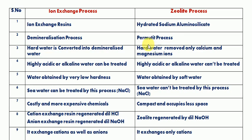In the zeolite process, permutit process is another name. Permutit process uses synthetic ion exchange material, while zeolite is a natural material — a green-coloured stone type mineral.